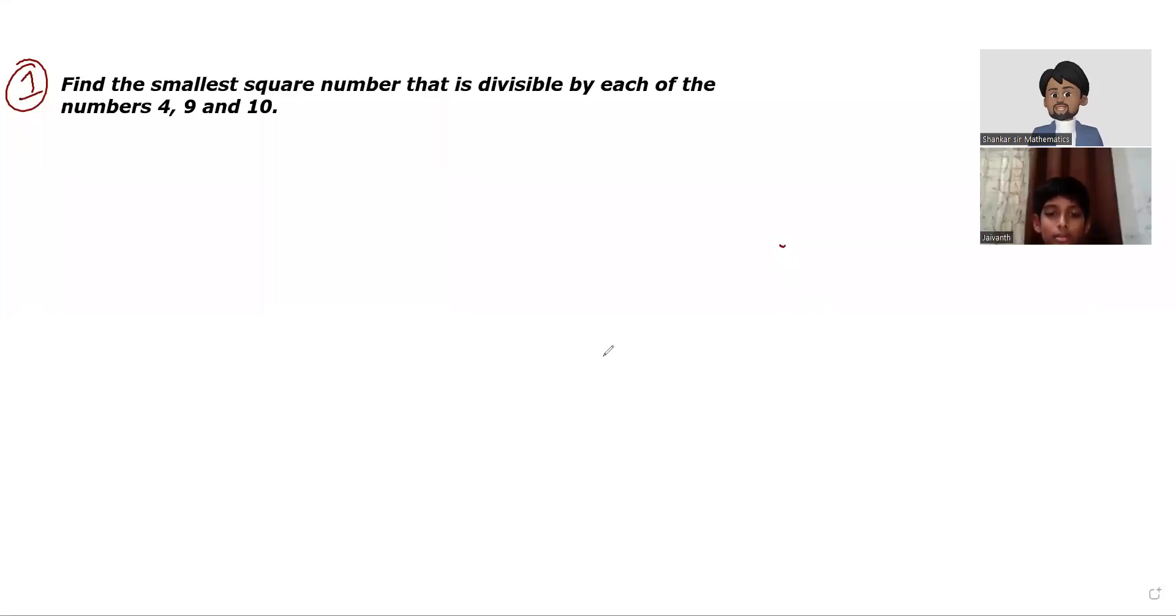Hello Jayvans, today we are going to discuss this question: Find the smallest square number that is divisible by each of the numbers 4, 9, and 10. So here we are going to find out the smallest square number that must be divisible by 4, 9, and 10.